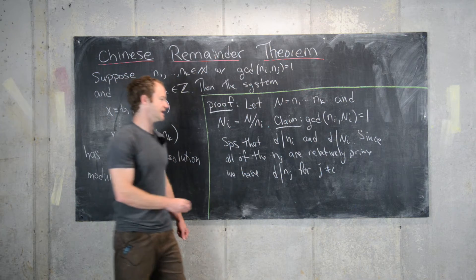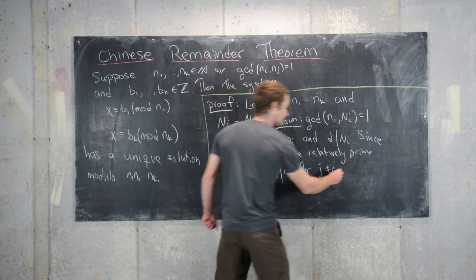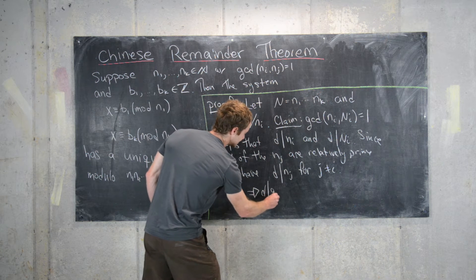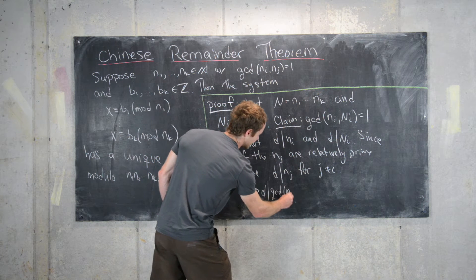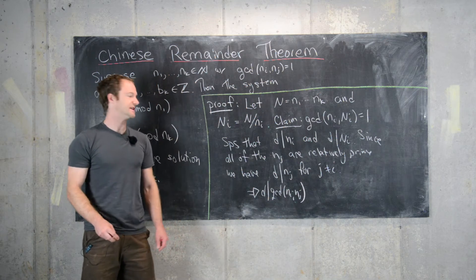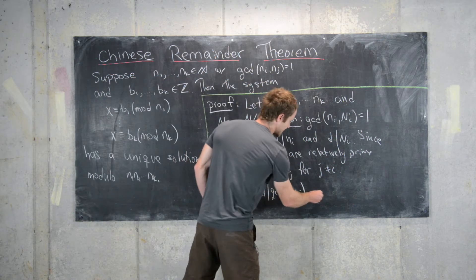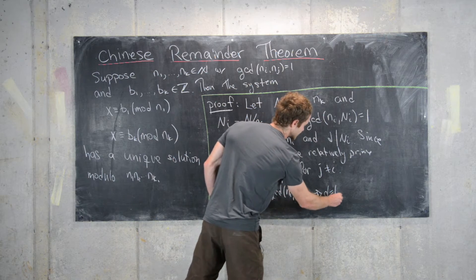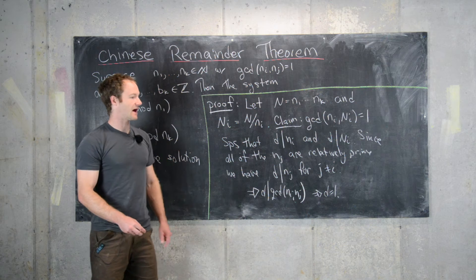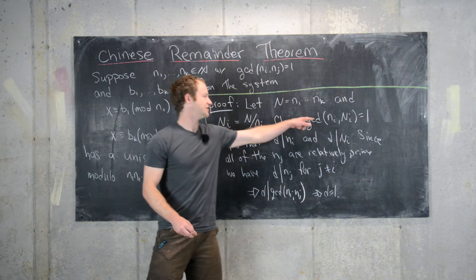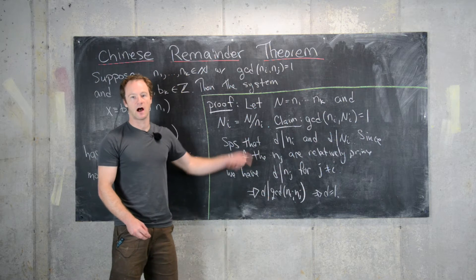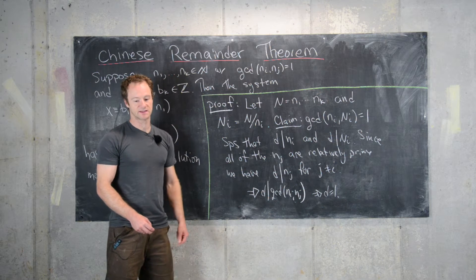That tells us that d divides the GCD of n_i and n_j, but that equals 1. So d divides 1, which tells us that d equals 1. We have therefore established that the GCD of little n_i and capital N_i is 1.